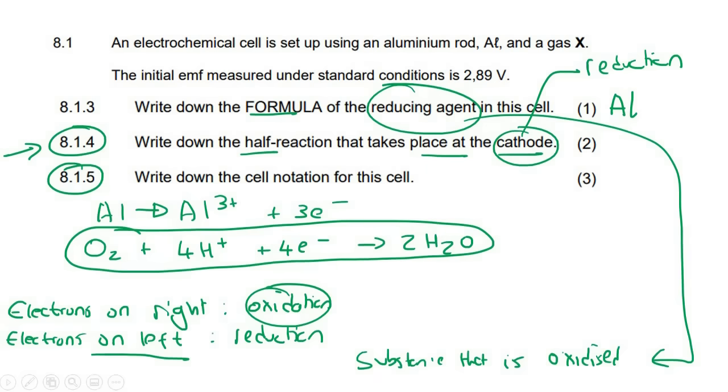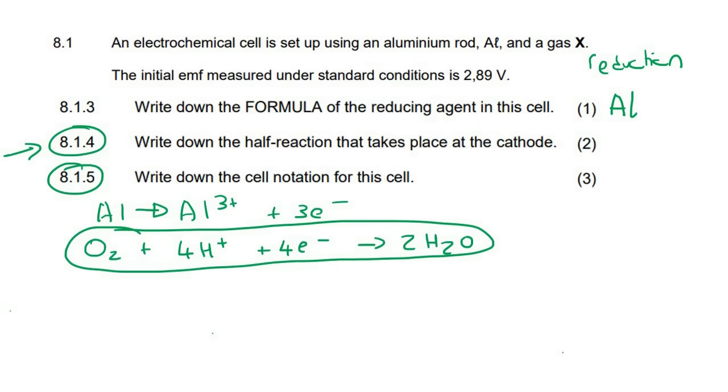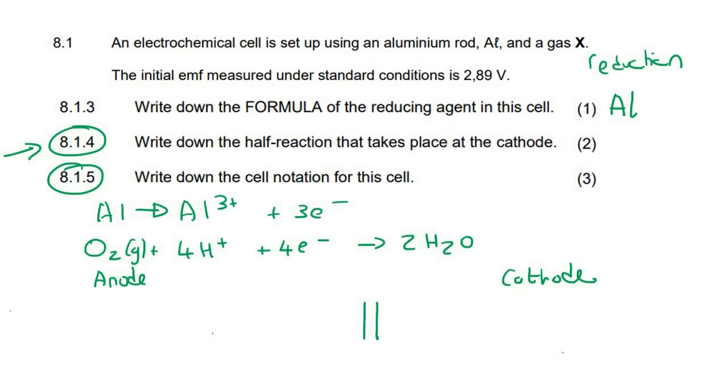This question says write down the cell notation. So remember with cell notation, and we know that this is a gas. Okay, so with cell notation, we know that you're always going to put a salt bridge. Okay, over there. And then you're going to have all the different phases of your anode. And then all the different phases of your cathode. So in your anode, you're going to have, so you always put your solid first. So you're going to have aluminum as your anode. Remember we said this is the anode where oxidation happens. And then this is the cathode where reduction happens. Okay, so we're going to start off by saying aluminum in the solid phase.